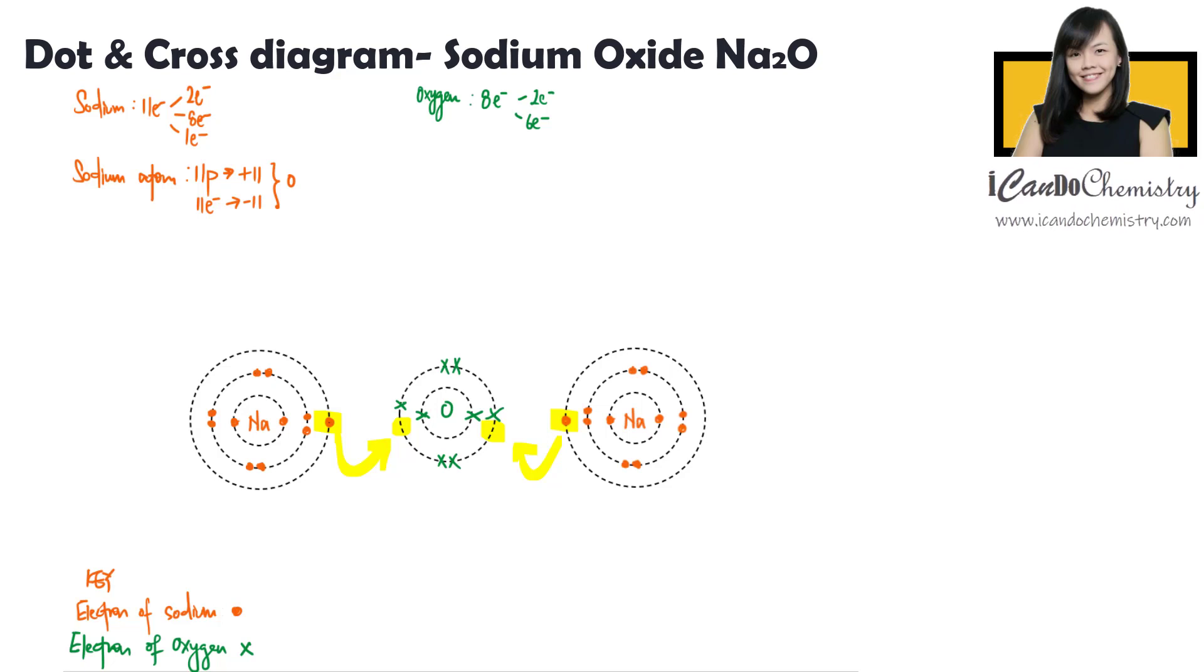Now when sodium gives away this electron to the non-metal, the number of protons remain unchanged. Hence, the positive charge is still positive 11. However, there are only 10 electrons left. Hence, the negative charge is negative 10. Overall charge in this ion is positive 1. We will need to represent this charge in the dot and cross diagram. Put the bracket and the charge.